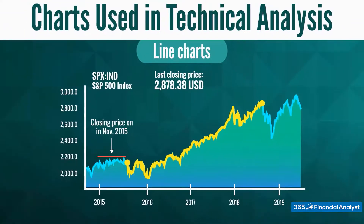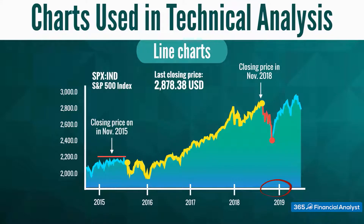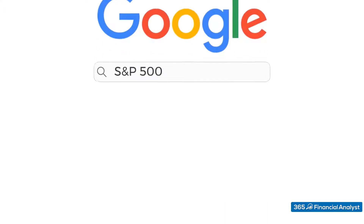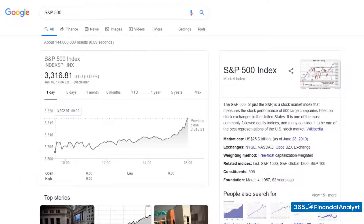As we can see, there was sideways movement in the S&P 500 before it started increasing steadily until 2018, when global political uncertainty caused stock prices to drop in the second half of 2018 and early 2019. The stock market then recovered successfully. This is a chart you can easily find by going to Google and searching for S&P 500.